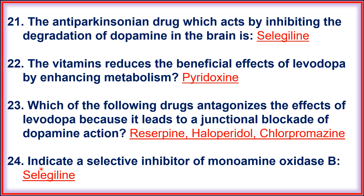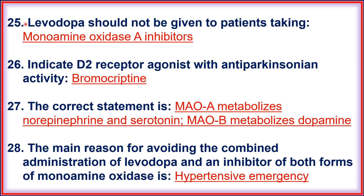Question twenty-four: a selective inhibitor of monoamine oxidase B is selegiline. Question twenty-five: levodopa should not be given to a patient taking monoamine oxidase A inhibitors. Question twenty-six: a D2 receptor agonist with anti-parkinsonian activity is bromocriptine. Question twenty-seven: MAO-A metabolizes norepinephrine and serotonin, while MAO-B metabolizes dopamine.